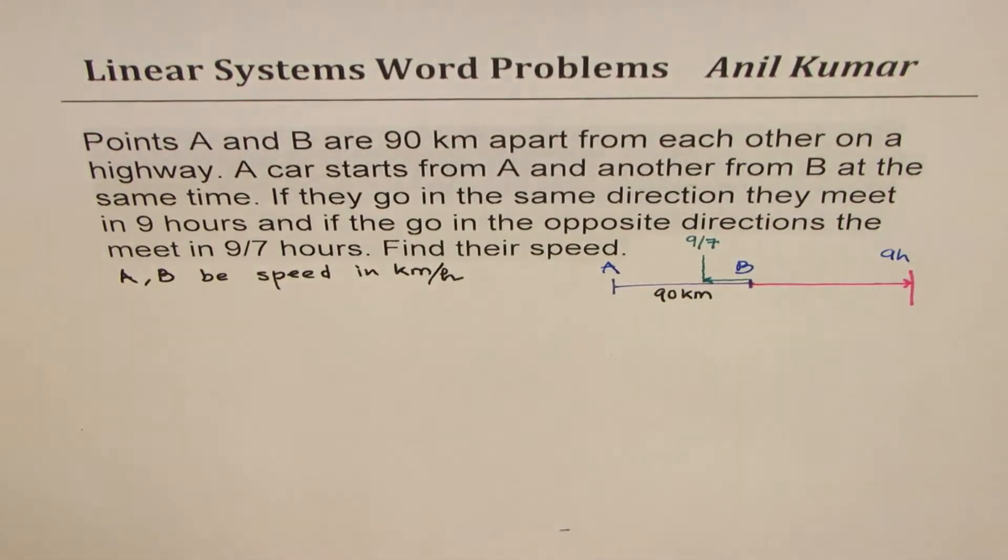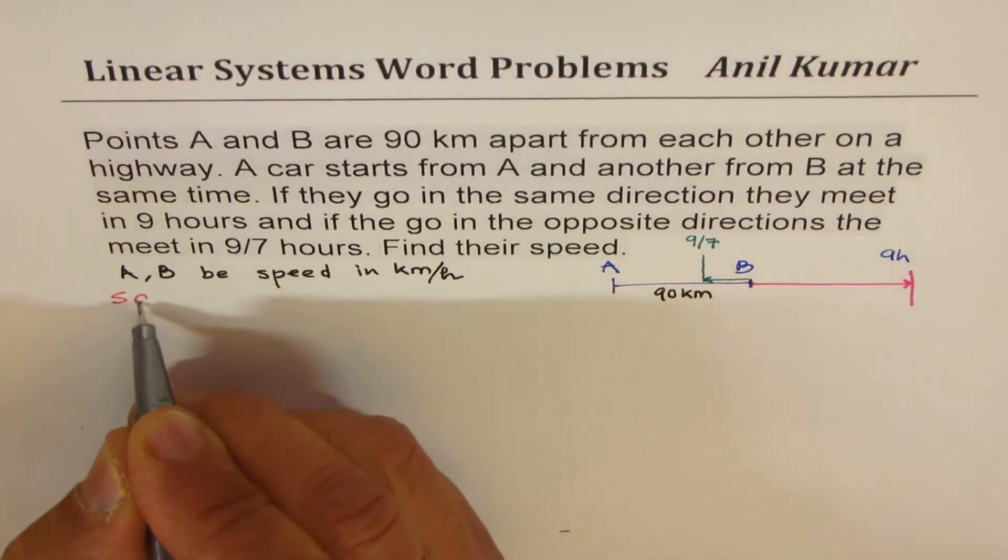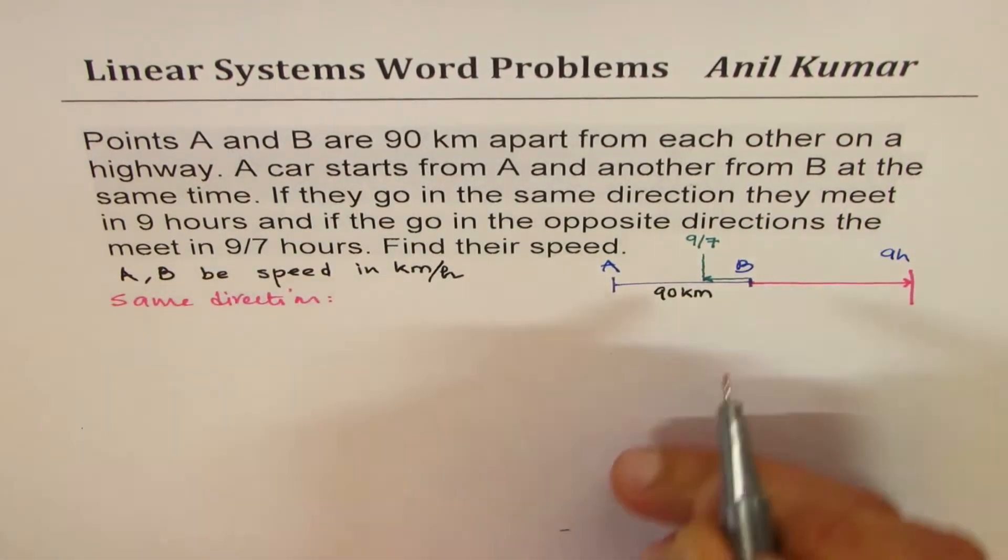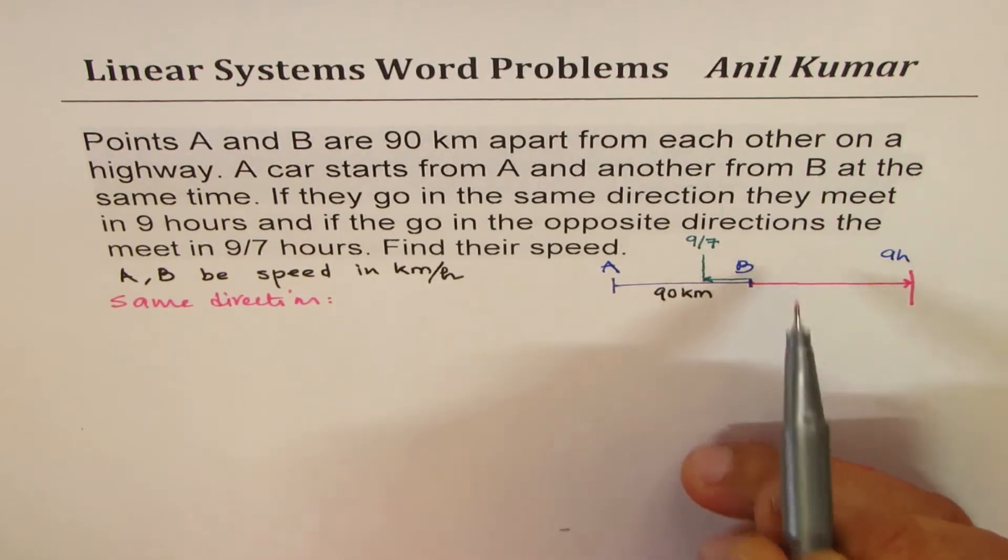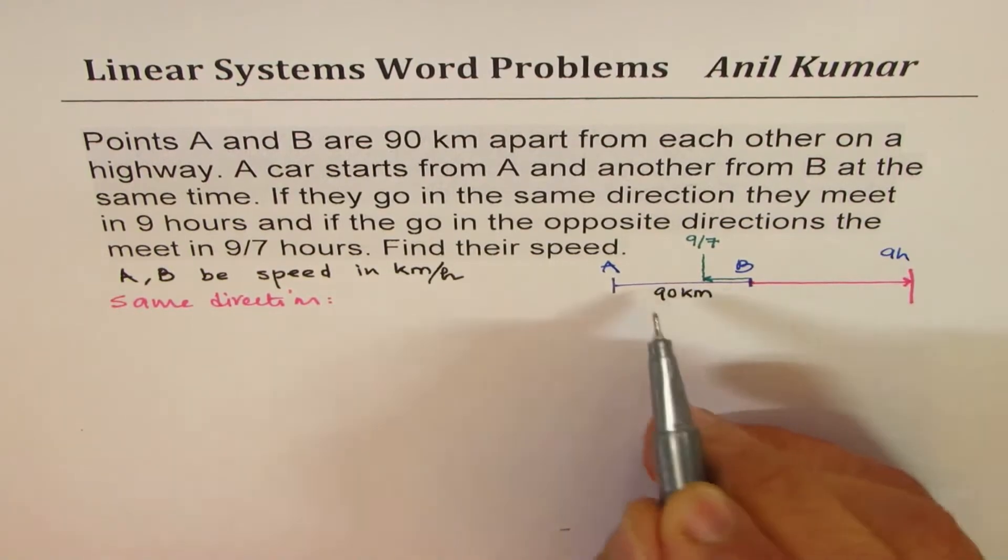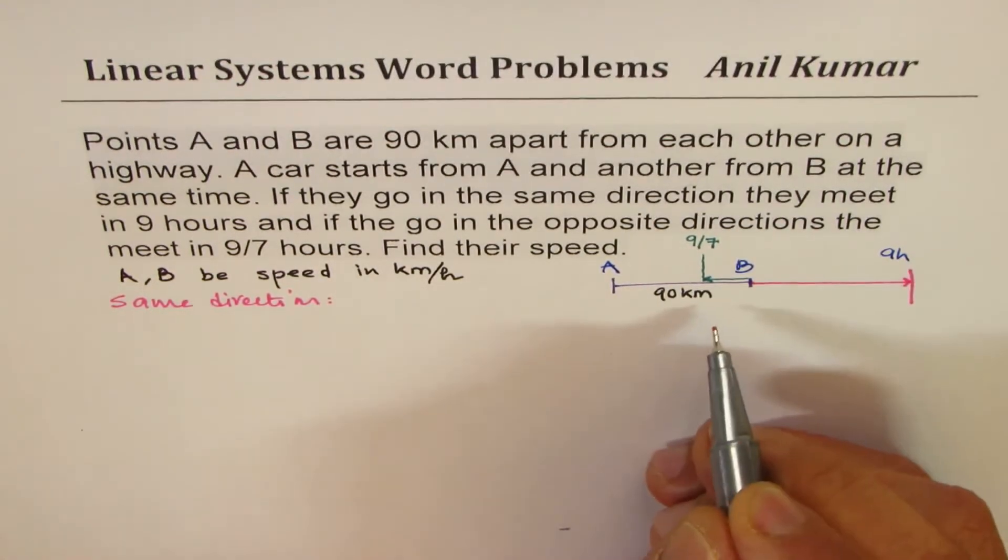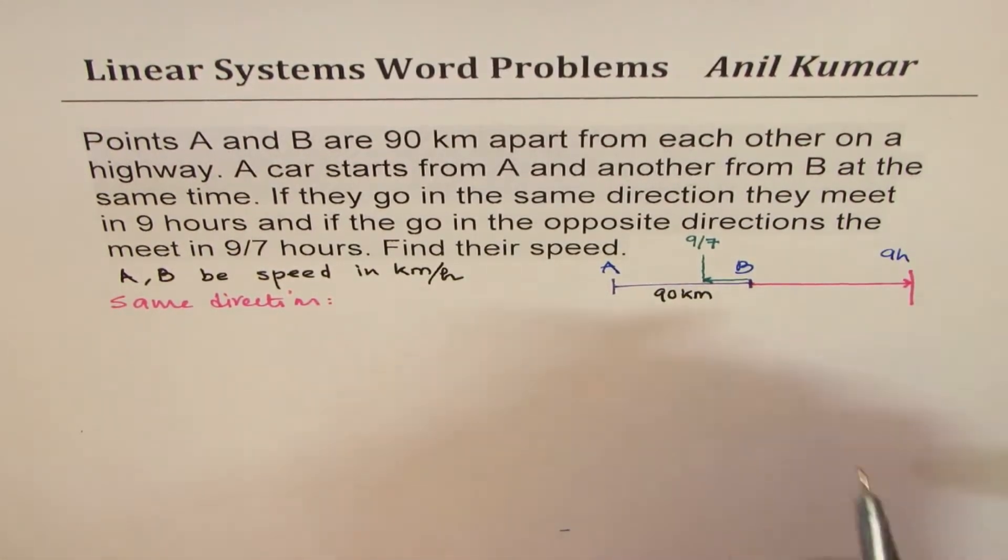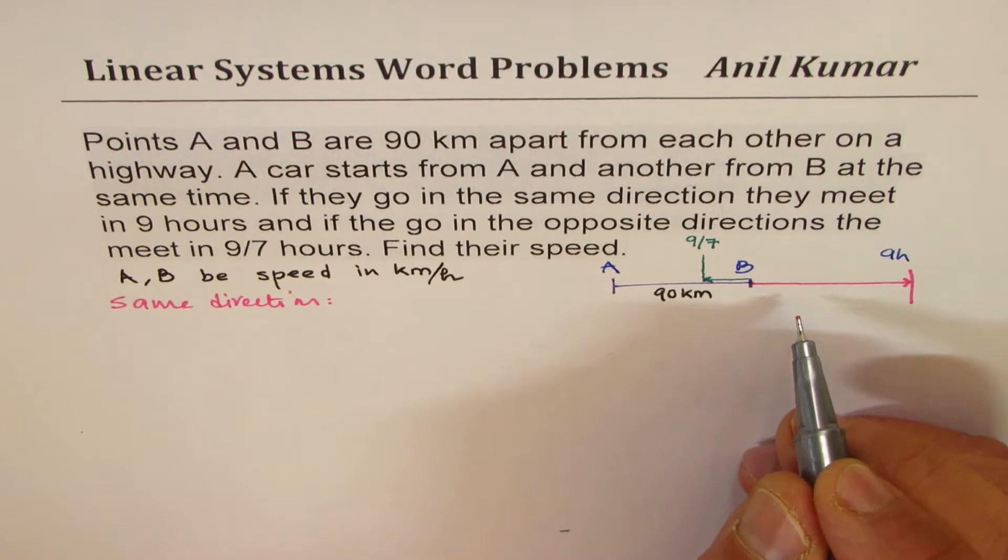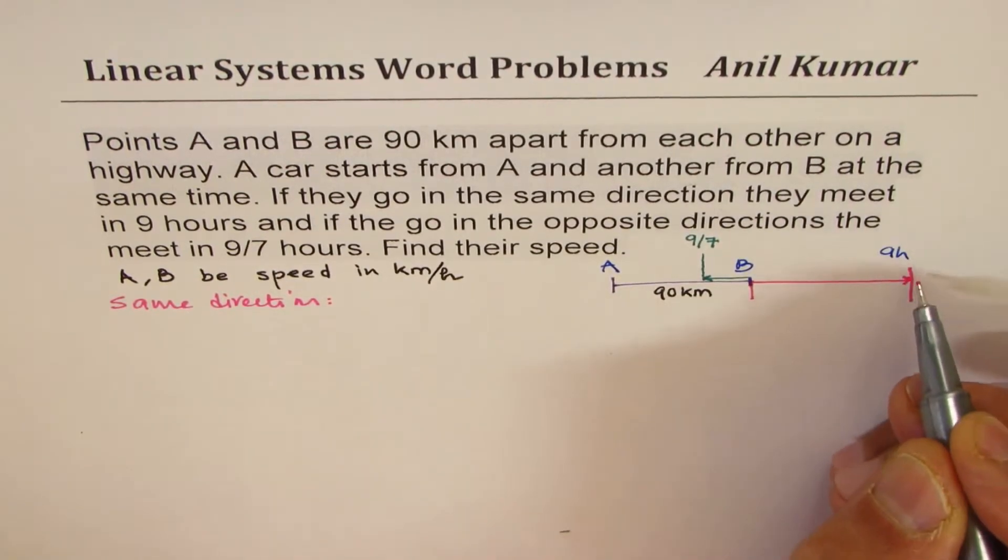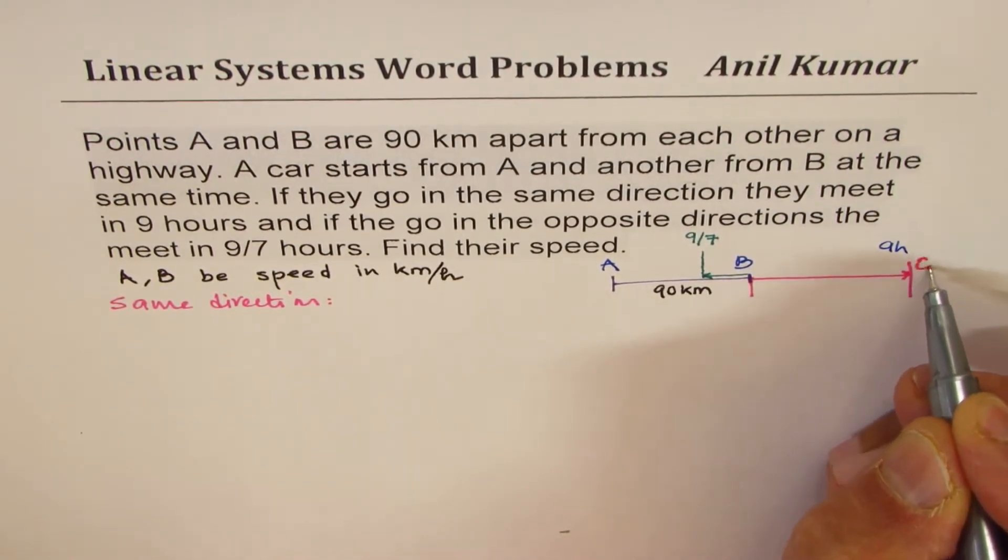And in case 1, let's say they are moving in the same direction. In that case, they are traveling for 9 hours each. So when they move in the same direction, they travel for 9 hours. Now, what we know is that distance is speed into time. So distance covered by A is, let's say, they meet at point C.